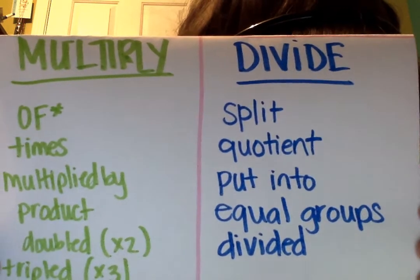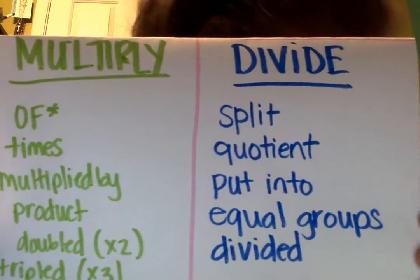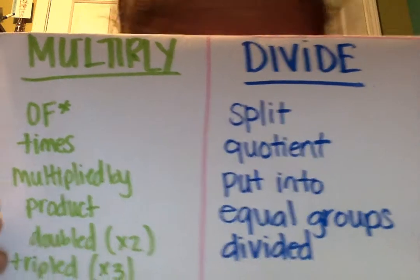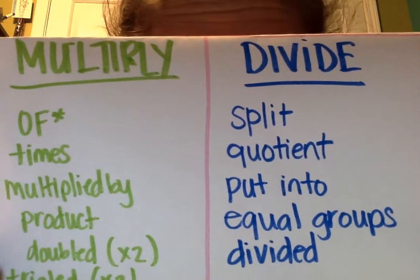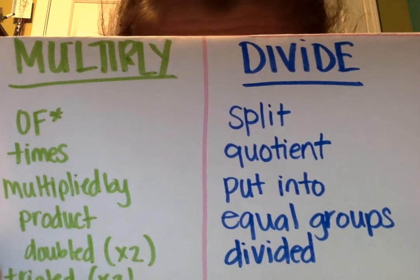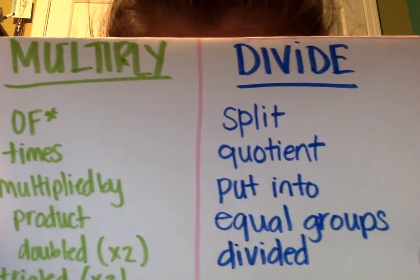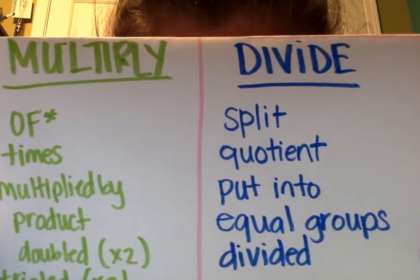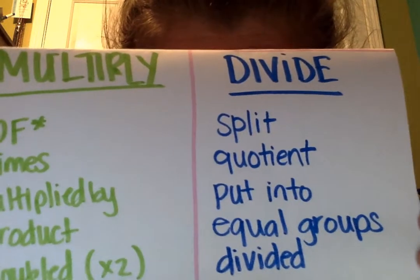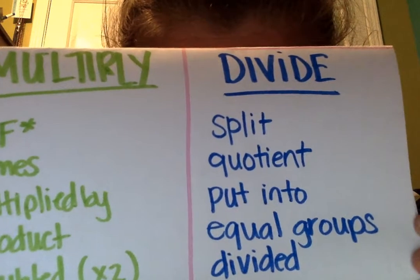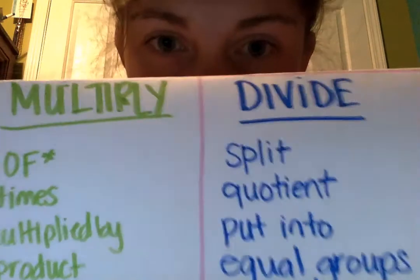Whenever we divide fractions, remember that you must use keep-change-flip. Keep the first fraction the same, change the division sign to a multiplication sign, and then flip the second fraction so the denominator is on top and the numerator is on the bottom.